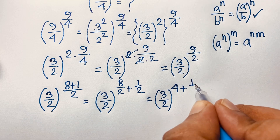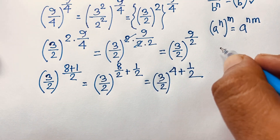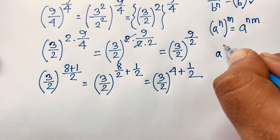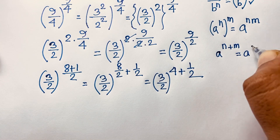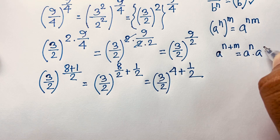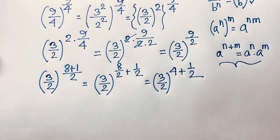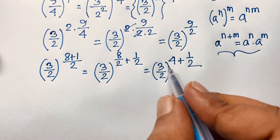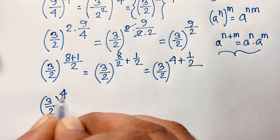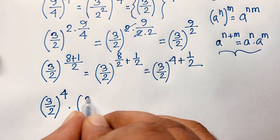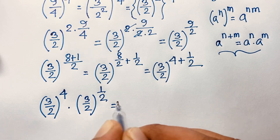Now I apply the exponential formula: a to the power (n + m) equals a^n times a^m. Applying this formula, the expression becomes (3/2) to the power 4, times (3/2) to the power 1/2.